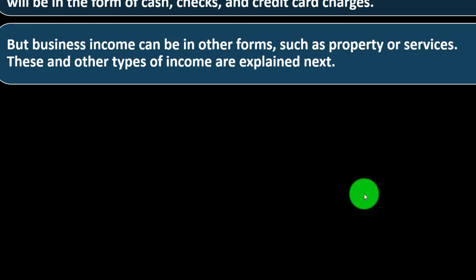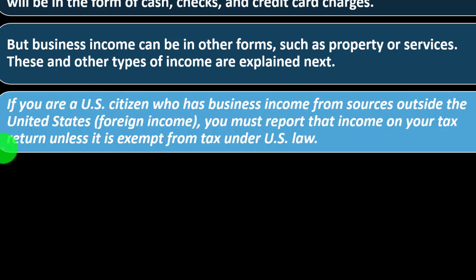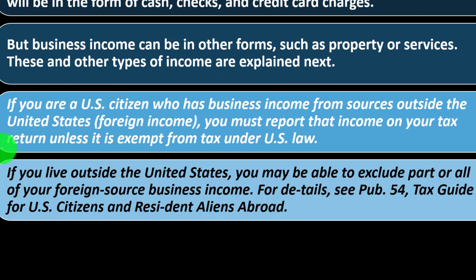If you are a U.S. citizen with business income from sources outside the United States — foreign income — you must report that income on your tax return unless it is exempt from tax under U.S. law. If you live outside the United States, you may be able to exclude part or all of your foreign source business income. For details, see Publication 54, Tax Guide for U.S. Citizens and Resident Aliens Abroad.